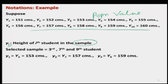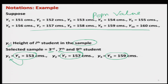Now I would like to draw a sample of size 3. Small y_i is the height of the i-th student selected in the sample — this is very important to keep in mind. Suppose using random number tables or software we select the numbers 3, 7, and 9 — meaning the third, seventh, and ninth students are in my sample. Their heights are 153, 157, and 159 centimeters respectively, denoted small y_1, small y_2, and small y_3.